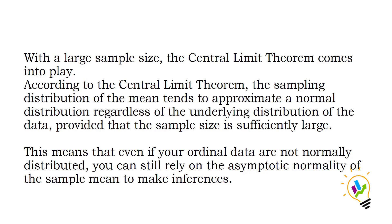With a large sample — generally in social science we take a sample of 300 and above — the Central Limit Theorem comes into play. According to the Central Limit Theorem, the sampling distribution of the mean tends to approximate a normal distribution regardless of the underlying distribution of the data, provided that the sample size is sufficiently large. This means that even if your ordinal data are not normally distributed, you can still rely on the asymptotic normality of the sampling mean to make inferences.